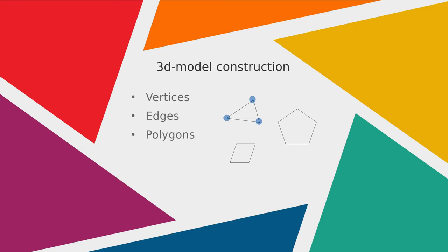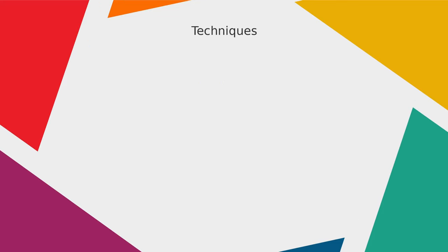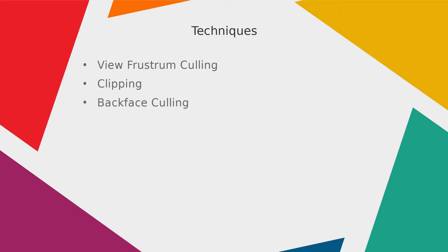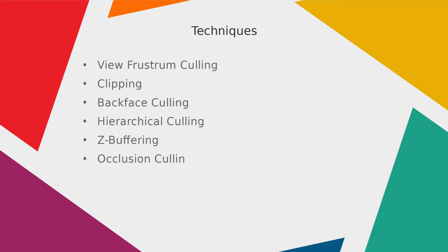Most 3D modelers try to stick to triangles or squares for their polygons. As I mentioned, there are different techniques under the umbrella term culling: there is view frustum culling, clipping, backface culling, hierarchical culling, z-buffering, and occlusion culling.